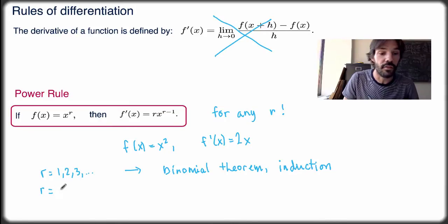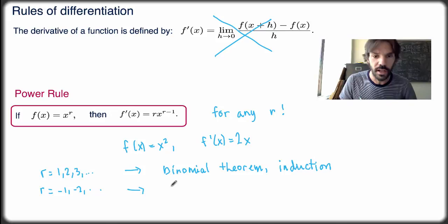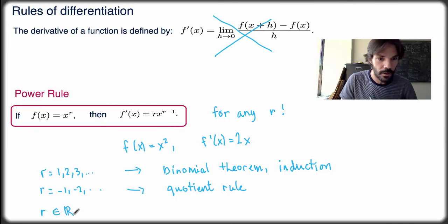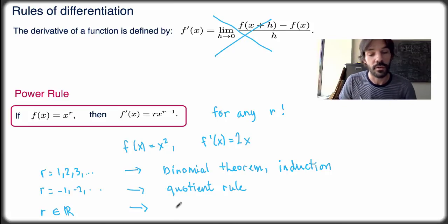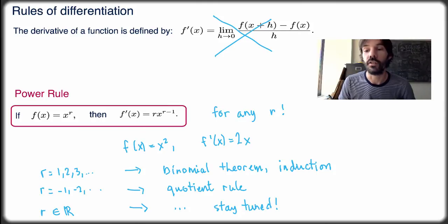For the case where r is not an integer — say r is a rational number — you can also prove the rule, but we don't know how to do it yet. We'll have to use something we'll see in a few weeks, so stay tuned. Right now we cannot prove the rule for a rational r with what we know, but you can trust that it's correct, and we'll come back later to prove it for the general case.